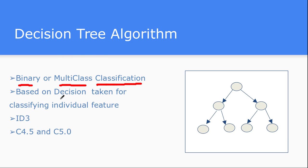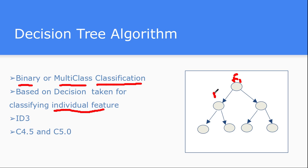The decision tree algorithm works by making decisions based on individual features to classify records. You are given a large set of features, and for the first feature you take a decision whether to go to the left side or right side of the tree. Based on that decision you then classify using the next feature.